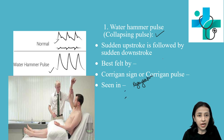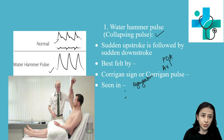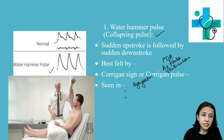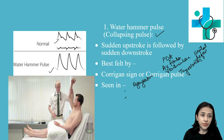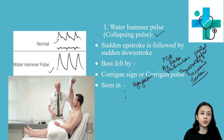Other causes for water hammer pulse include patent ductus arteriosus, arteriovenous fistula, ventricular septal defect. In hyperkinetic states like thyrotoxicosis there is hyperkinetic circulation. Also severe anemia and beriberi — all conditions with hyperdynamic circulation — can present with this kind of collapsing pulse.